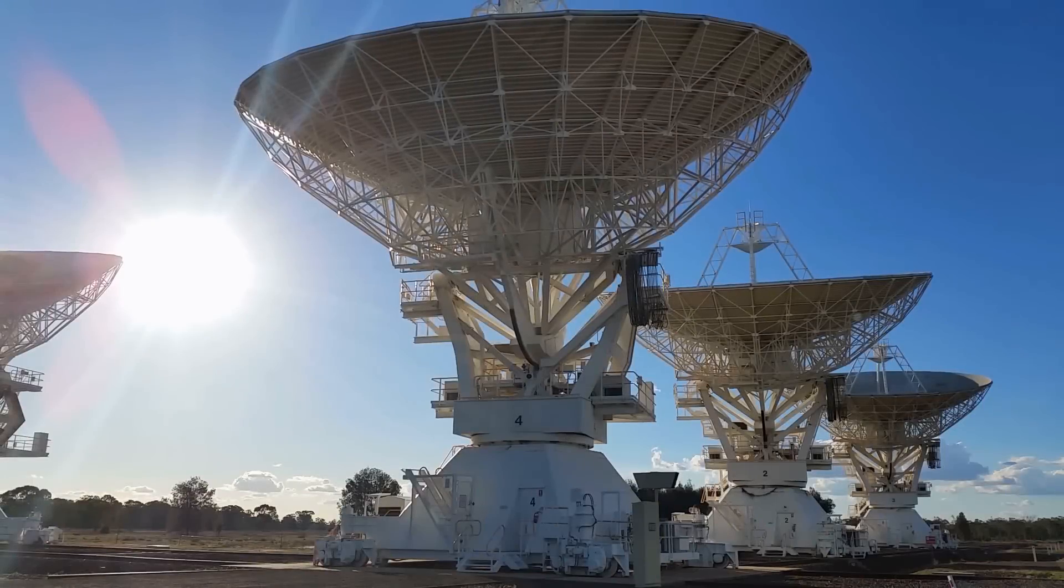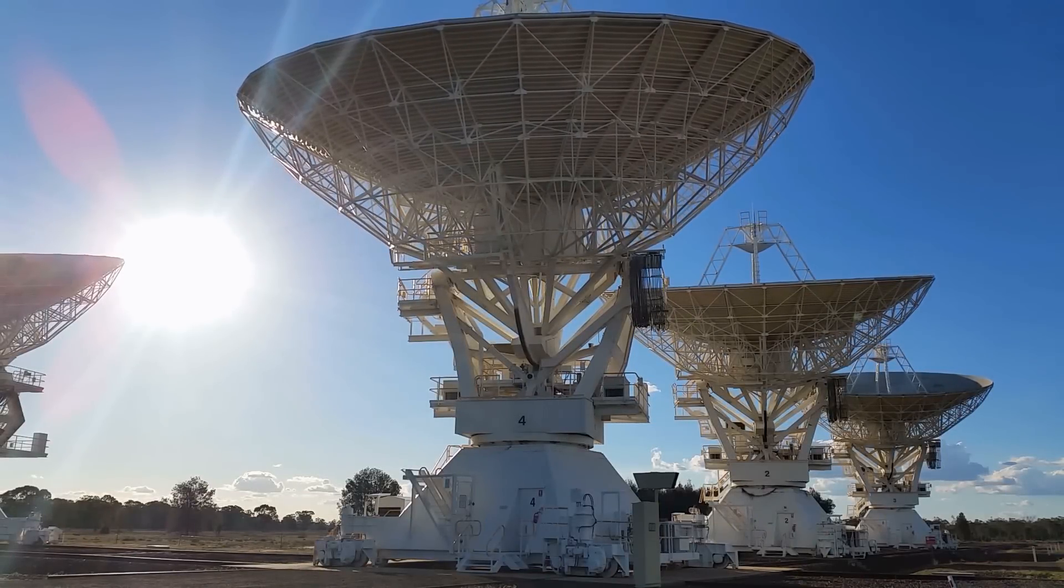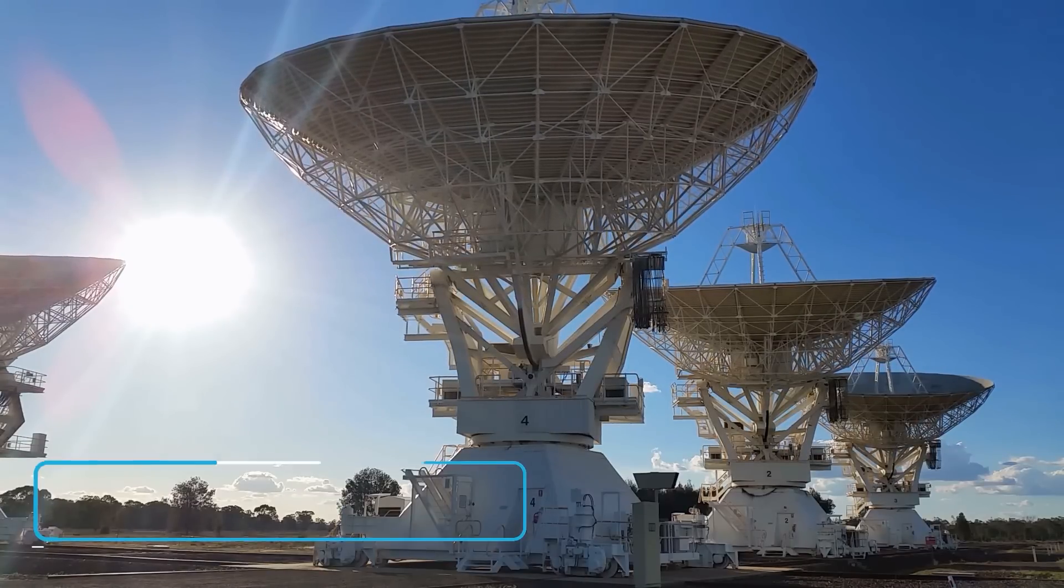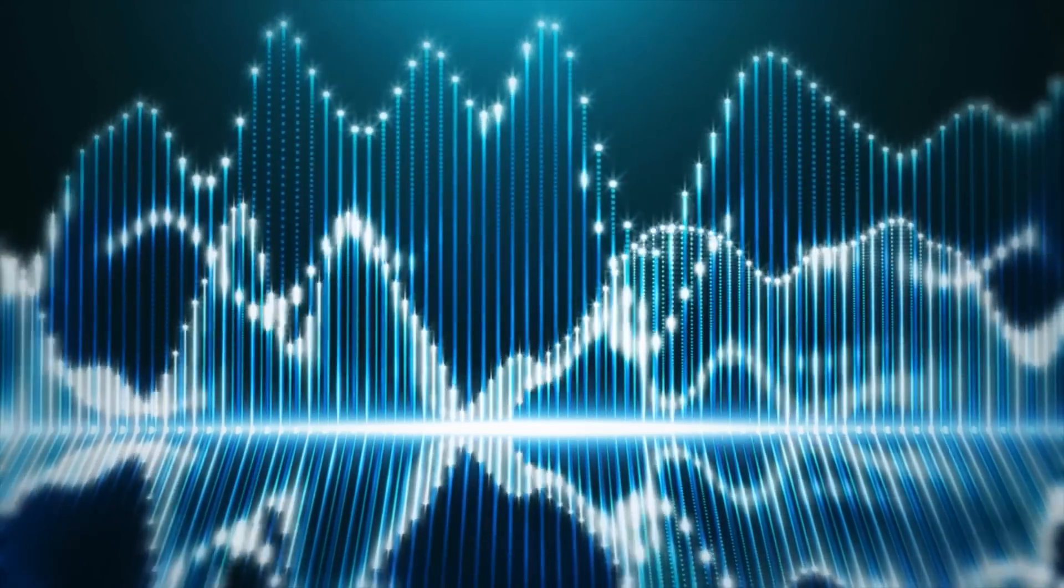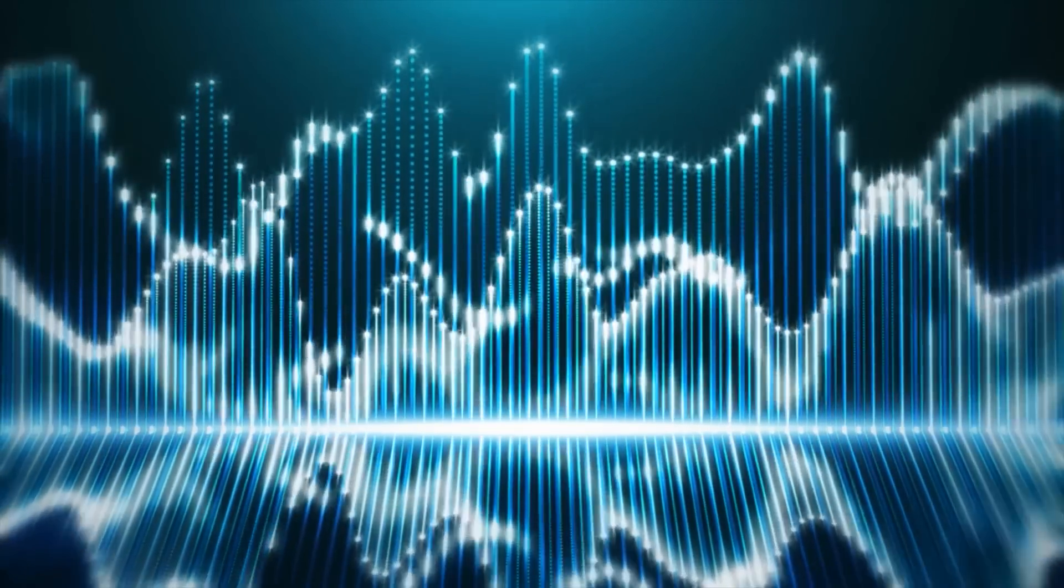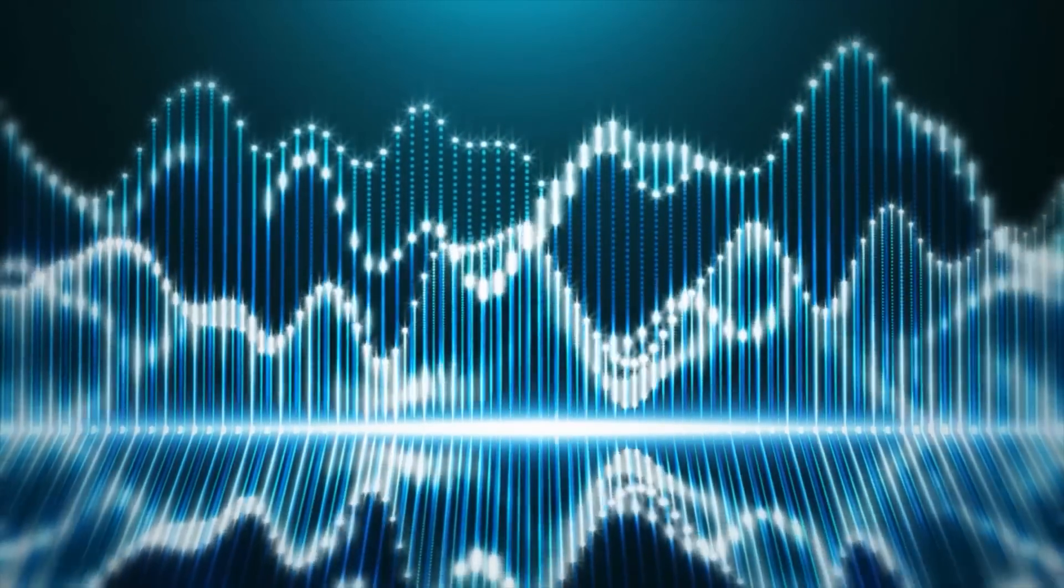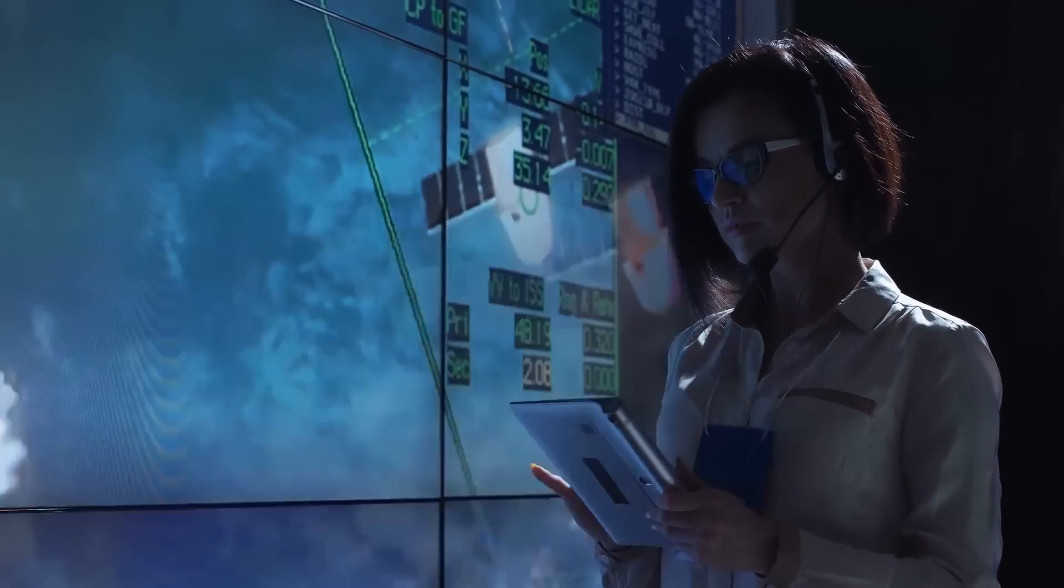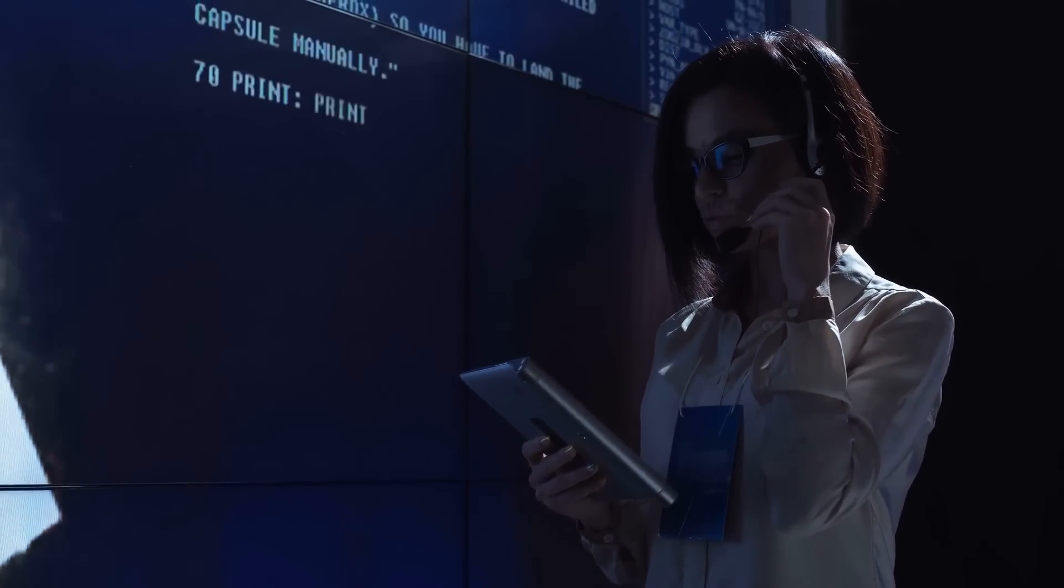The Proxima Centauri radio signal detection recalls the WOW signal detection on August 15th, 1977. The Big Ear radio telescope in Delaware, Ohio received the most powerful signal it would ever detect during its decades of observations. The signal lasted just 72 seconds, but when an astronomer spotted it on a computer printout days later, he was so impressed that he quickly scrawled WOW in red pen across the page.